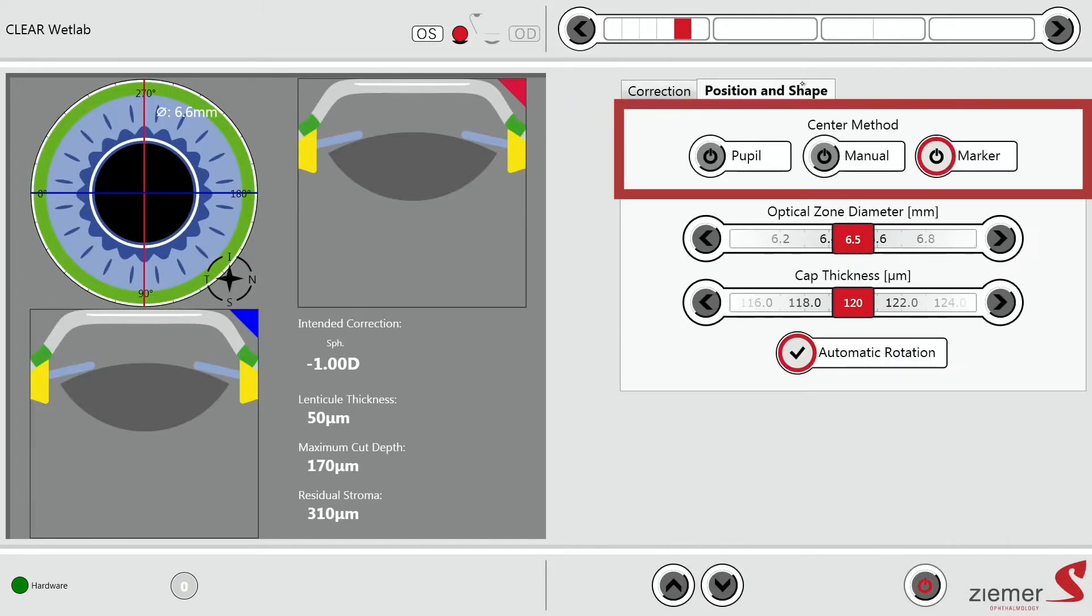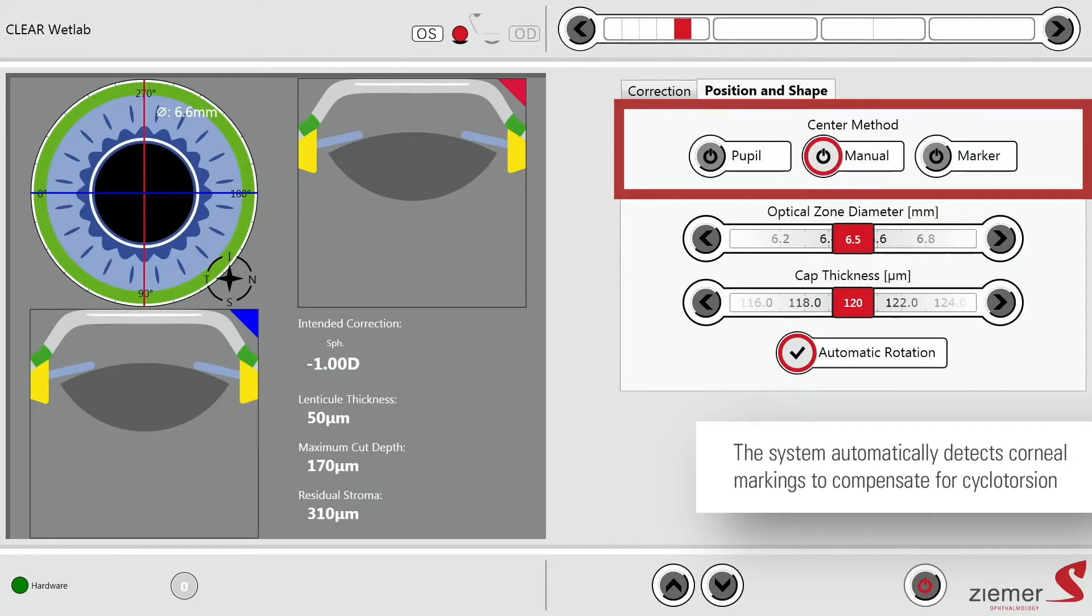Here for the centration method, we offer with the Z8 three different options. We have the pupil, we have the manual, and we have marker. So if you mark the cornea with the software, we will be able to detect those and adjust centration and cyclotorsion. Those are unique with our Femto LDVZ8.